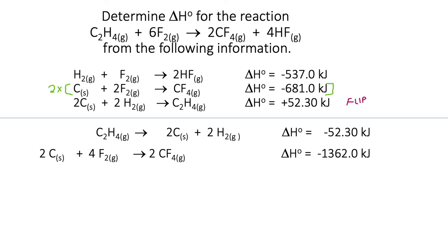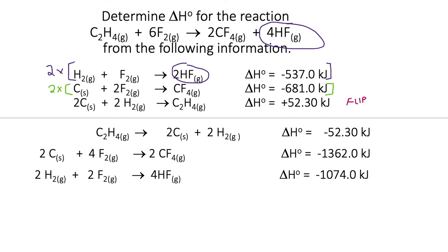Finally, we're looking for four hydrofluoric acids. We have two HF in the given equation and want four, so we multiply by two: 2H2 plus 2F2 gives 4HF. The enthalpy is also multiplied by two.